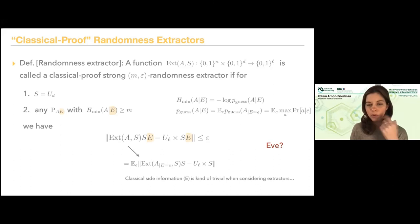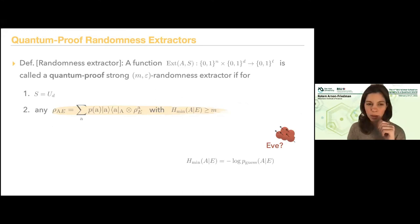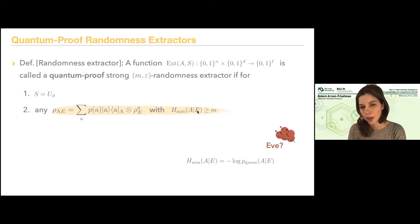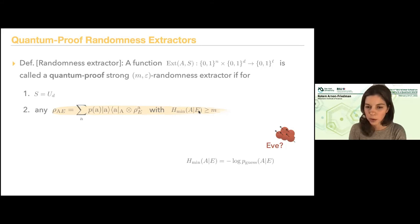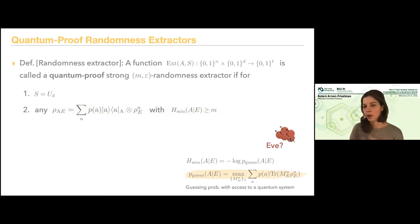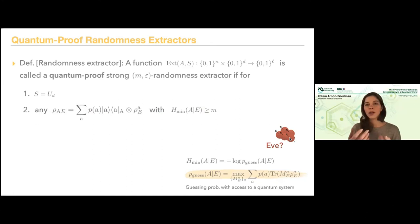Of course we want to move to the quantum case. In the quantum case, I don't have a distribution over A and E — instead I have the classical-quantum state shown before. My condition is that I have the conditional min-entropy ≥ M. A is classical, E is a quantum system. We can still define it in terms of guessing probability: I ask you to guess the value of A and you have access to the quantum system E — you can make measurements on E and use the outcome to try to guess A. This is the definition of guessing probability, which defines the conditional min-entropy for a classical-quantum state.